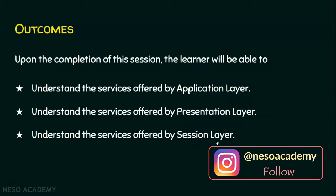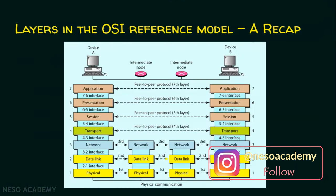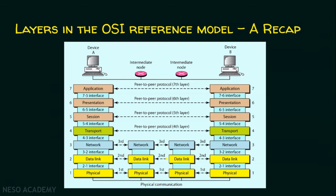We will start with the layers of the OSI model. In the previous lecture we saw the various layers available in the OSI reference model. Now we will just have a recap. We have application layer, presentation layer, session layer, transport layer, network layer, data link layer, and physical layer. If two different systems want to communicate with each other, they can use the OSI reference model as a guideline for their data communication.